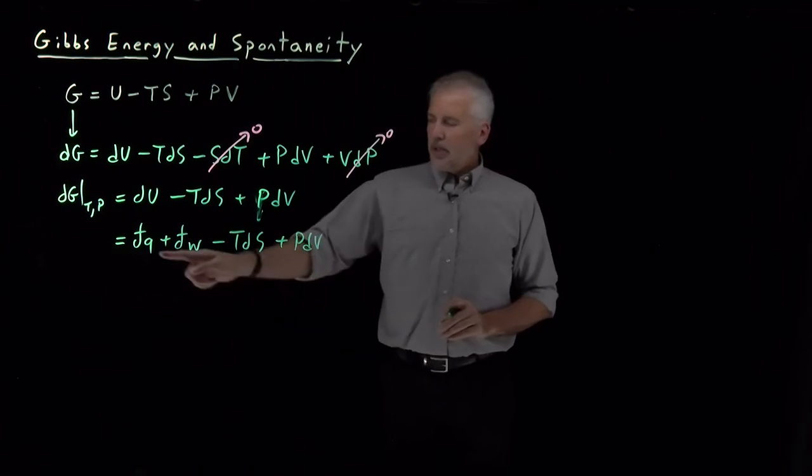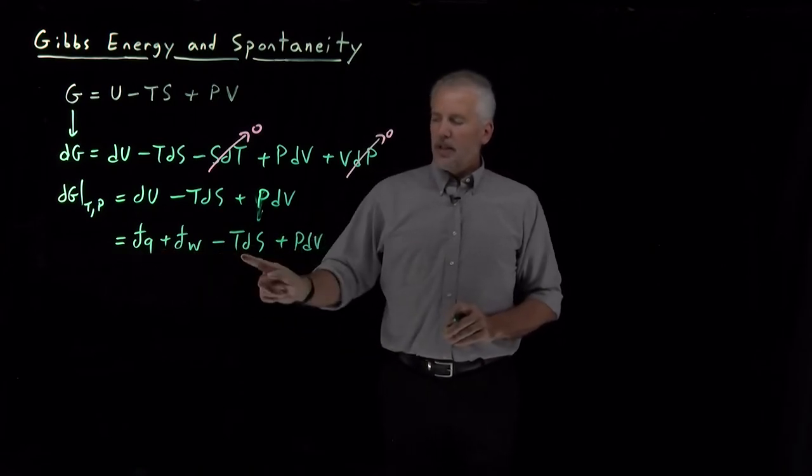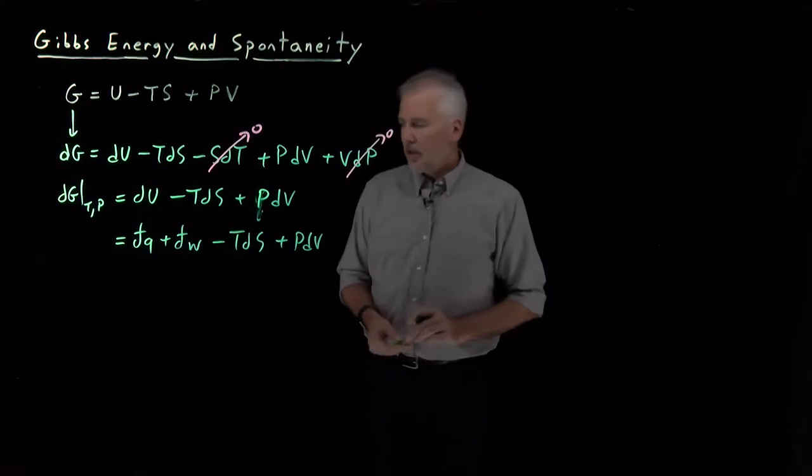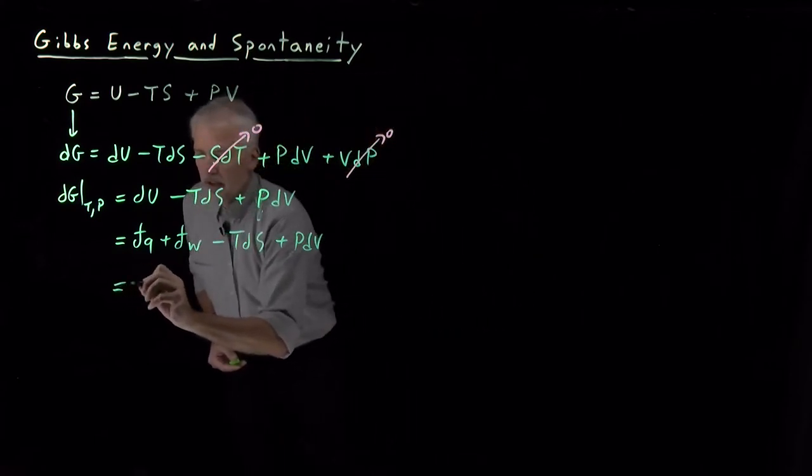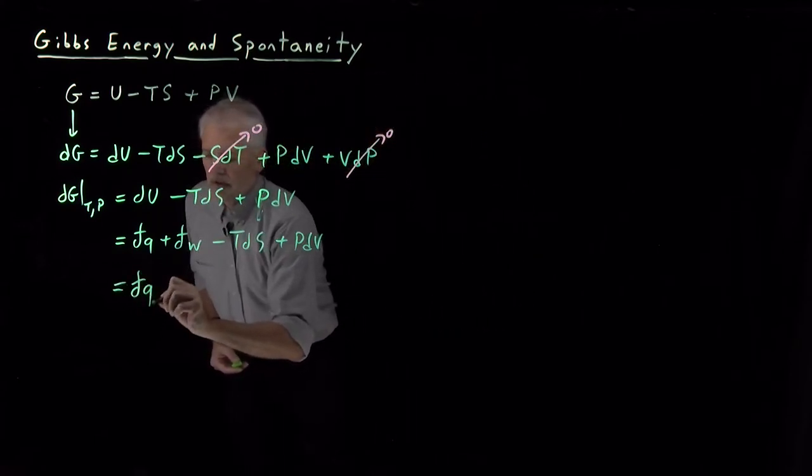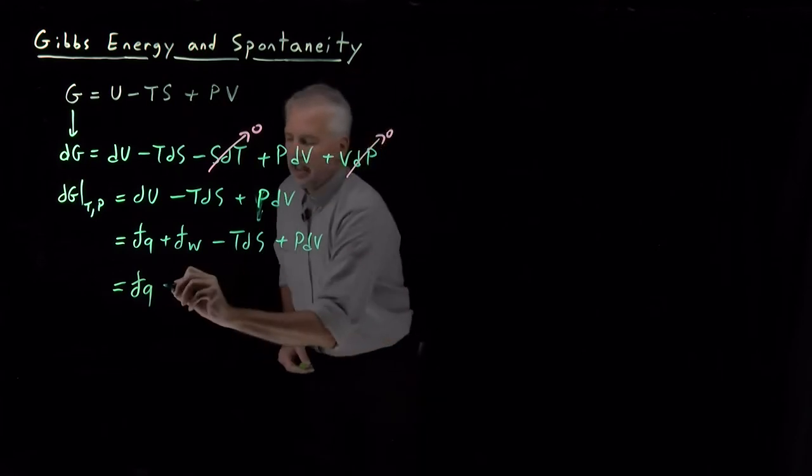We can make some connections between dq and TdS, and between dw and PdV. In particular, let me rearrange this equation so those terms are nearer to each other: dq - TdS plus the work terms.